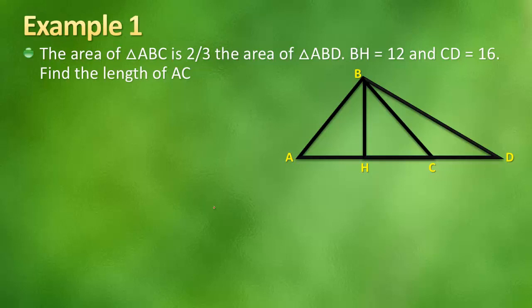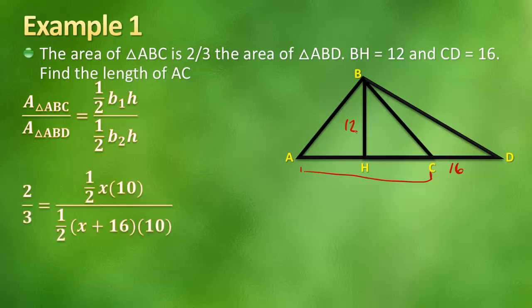Let's look at another example. The area of triangle ABC is 2 thirds the area of triangle ABD. We know that BH is 12, and we know that CD is 16. Find the length of AC. So we need to find the length of this piece here. So what we're going to do, we're going to set the area of ABC over the area of triangle ABD. And again, it's half the base of the 1 times the height, half the base of the other times the height. And since they're included in the same triangle, they're going to share that height. And I don't know why I put that as 10. That should be 12. My bad.